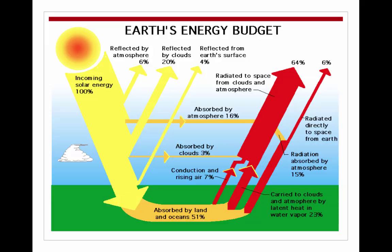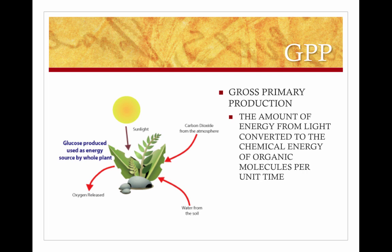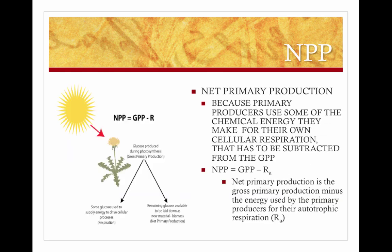Earth's primary producers produce about 150 billion metric tons, or 1.5 × 10¹⁴ kilograms, of organic material every year. The GPP, or gross primary production, is the amount of energy from light converted to chemical energy of organic molecules per unit time. Because primary producers use some of that chemical energy for their own cellular respiration, we look at the NPP — net primary production — which is GPP minus the energy used by primary producers for their cellular respiration, or RA (autotrophic respiration).